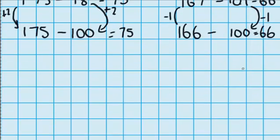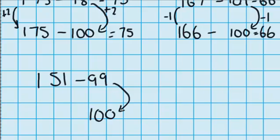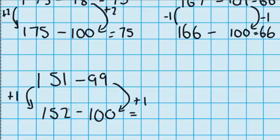Let's do one last question: 151 minus 99. Just like last time, I'm thinking of a tidy number close to 99, which is 100. To change it into 100 I have to add 1, which means to keep the gap between these numbers the same, I'm also going to add 1 to 151, so it becomes 152. The distance between these two numbers is the same. 152 minus 100 is 52, so 151 minus 99 is also 52.